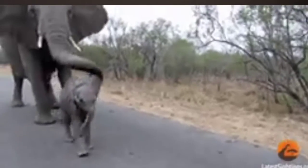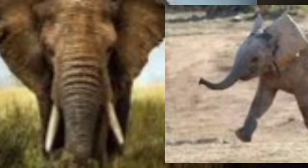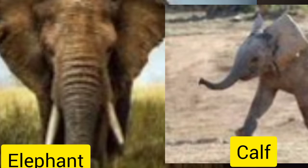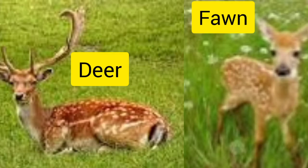Elephant, cub. Young one of elephant is cub. Deer, fawn. Young one of deer is fawn.